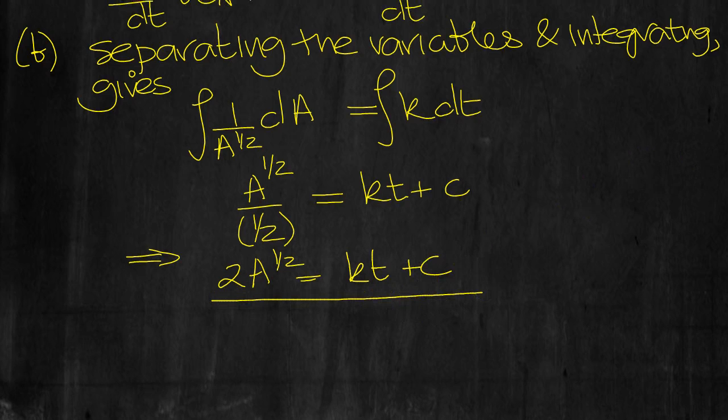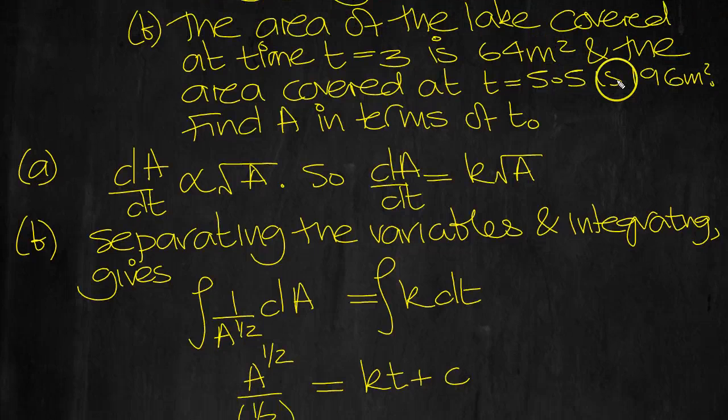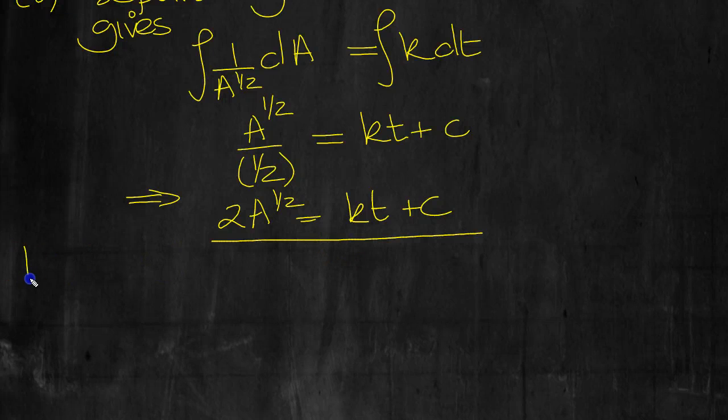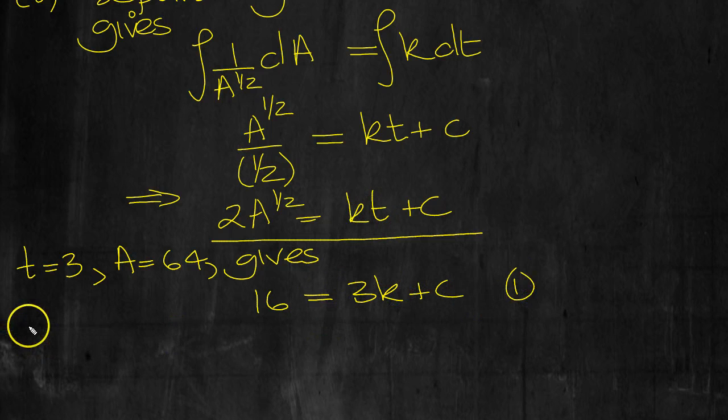Now we're putting the initial conditions. First of all, we know that when t is 3, the area is 64. t equals 3, A equals 64 gives 2A to the half. 64 to the half is 8. 2A to the half is 16. t is 3, 3K plus C. That's equation 1.